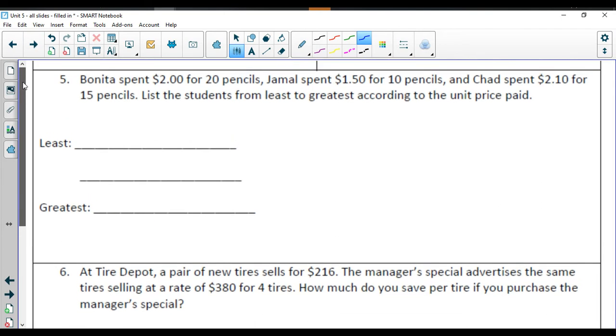Final two questions here. Number 5: Benita spent $2 for 20 pencils, Jamal spent $1.50 for 10, and Chad spent $2.10 for 15. List the students from least to greatest according to the unit price paid. So let's do Benita. She is $2 for 20 pencils. $2 divided by 20 pencils is going to give me $0.10 per pencil.